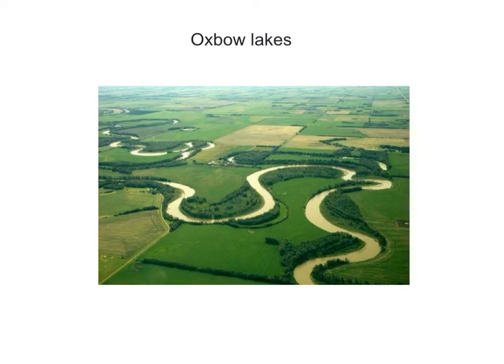Welcome to this tutorial about the formation of oxbow lakes in a river. An oxbow lake is one which used to be part of the river but is now a distinct lake in its own right. So how does it form?